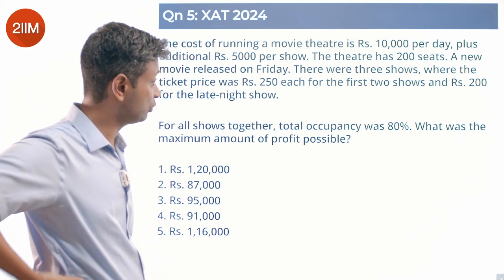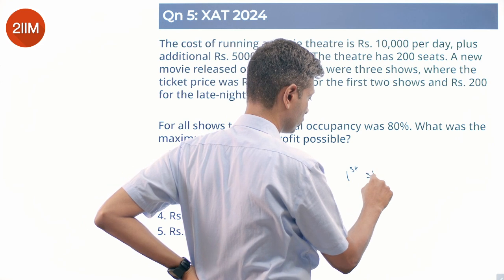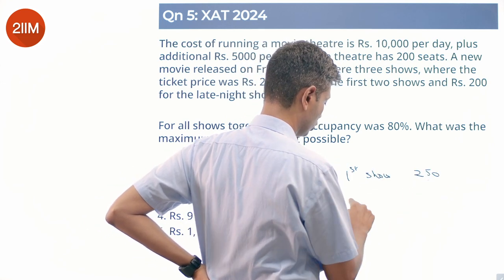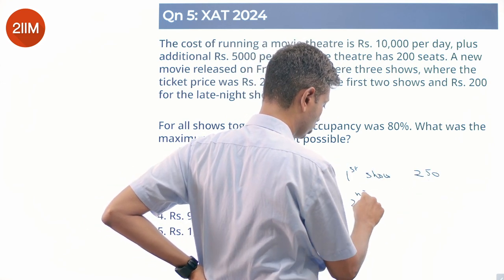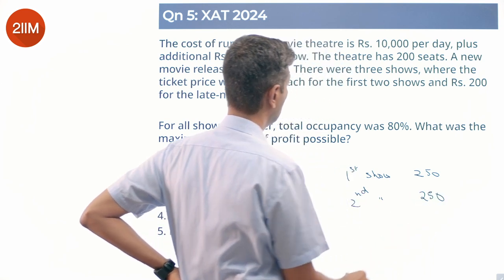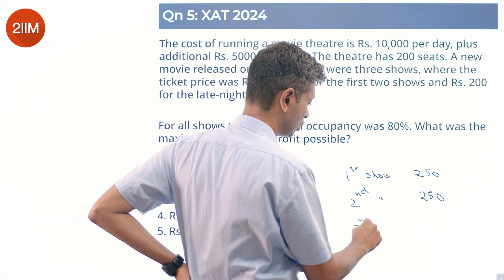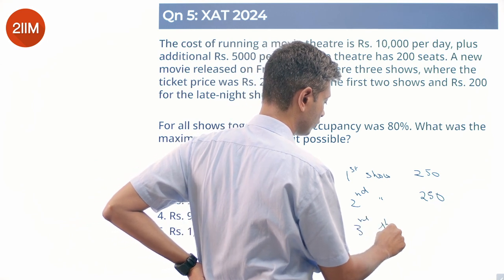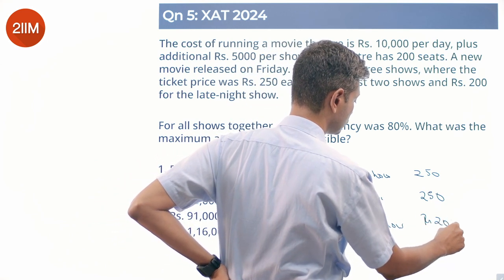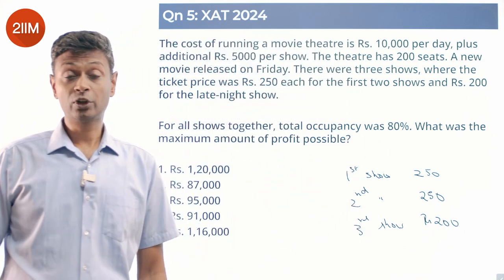The first show is 250 rupees and the second show is also 250 rupees. The late night third show is rupees 200, with 200 seats available per show.